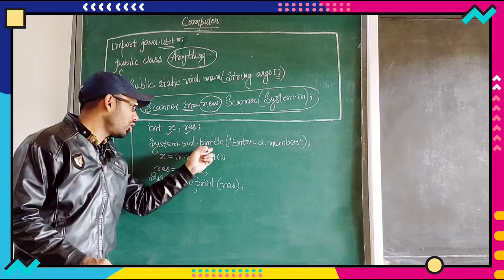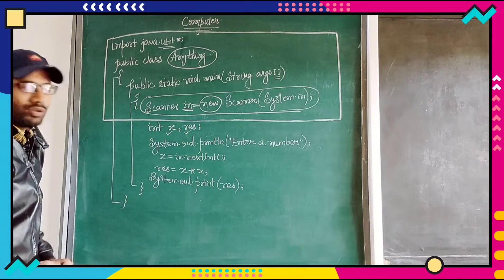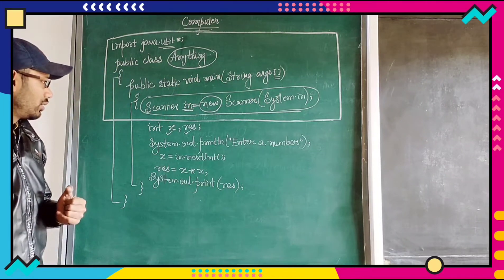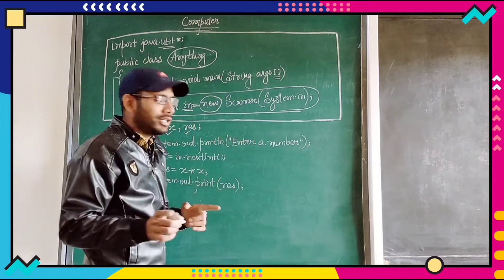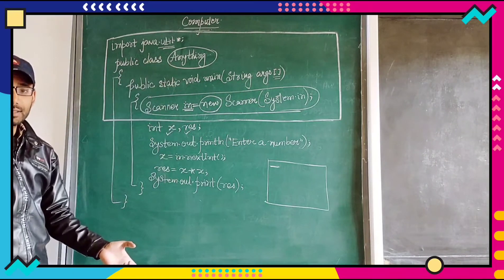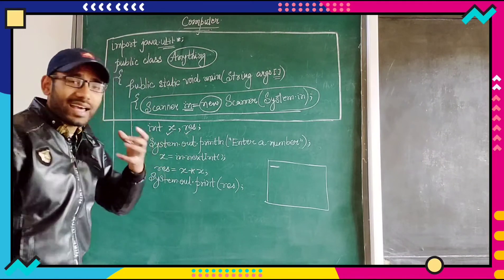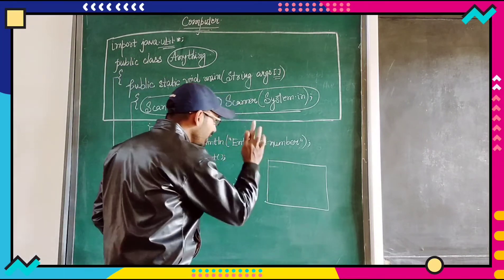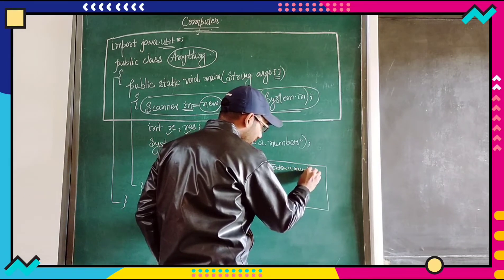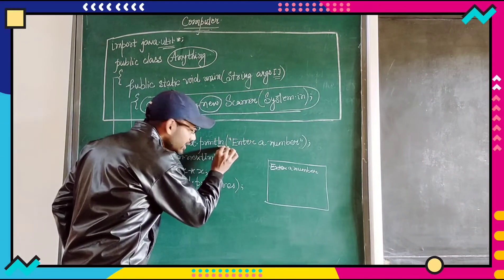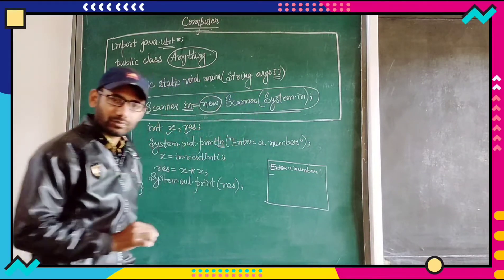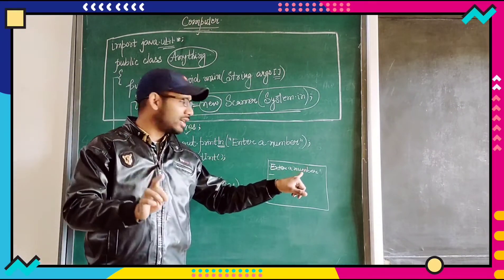After that system dot out dot println enter a number. This very particular program is very important because the approach of this program is very crucial. Previously what I had taught, simply the result was being displayed. But in this case each and everything will be displayed in a very arranged way. First of all something like this will be displayed, enter a number. After that since ln is being utilized, cursor will not wait over here. Instead the cursor will come back over here.